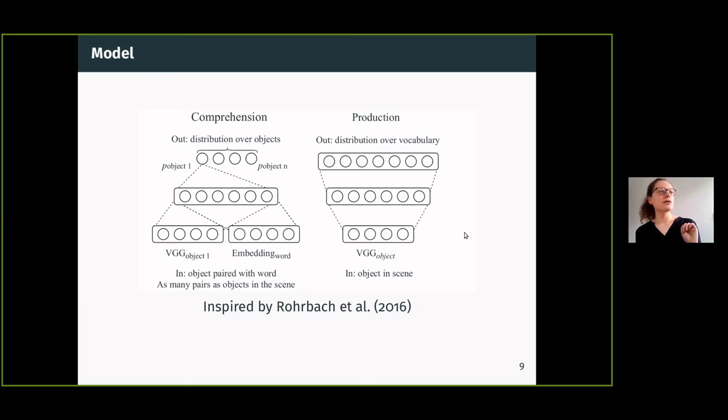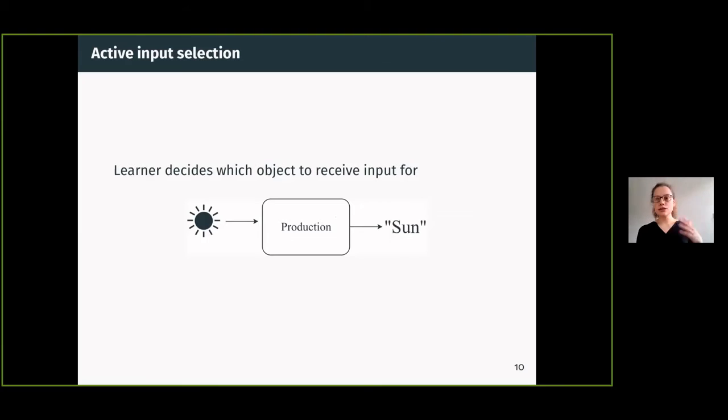Now how do we use this two-part thing to also select input? We sort of flip the modules. What we do, because we want to know for each object in the scene would it be helpful to receive the label at this point, would it be helpful to receive language input for this one.